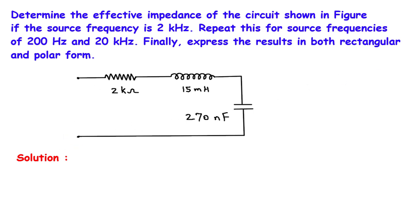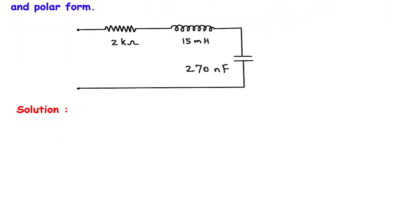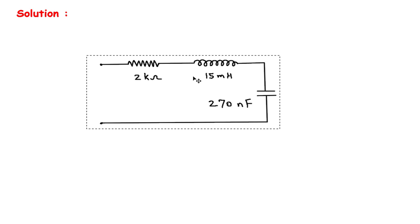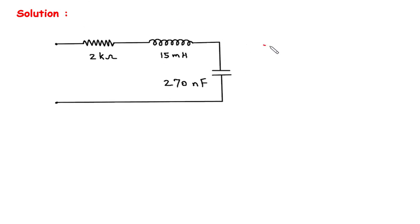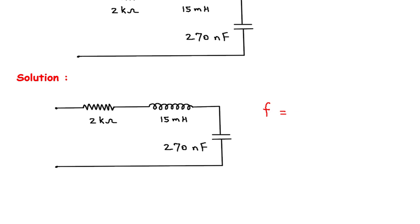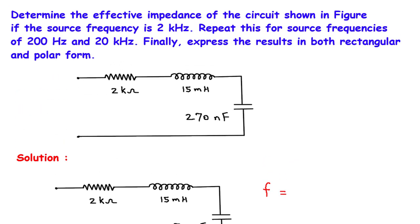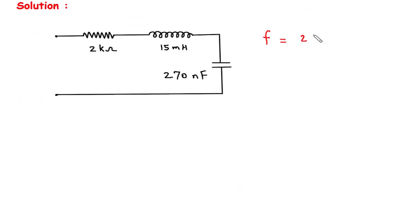Solution. First of all we will redraw the circuit. The value of frequency is given, so first the value of frequency is 2 kHz.